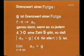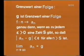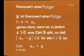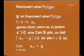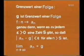g ist Grenzwert einer Folge a_n genau dann, wenn es zu jedem Epsilon größer 0 eine Zahl s gibt, sodass |a_n - g| kleiner als Epsilon ist für alle n größer s. Wir sagen dann: Limes a_n für n gegen Unendlich ist g.